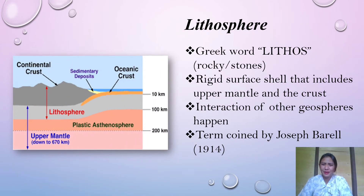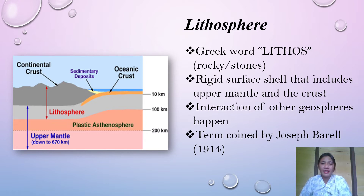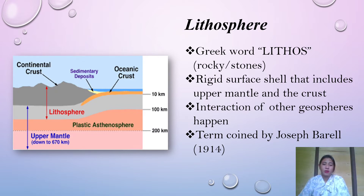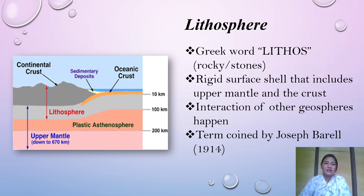What is the lithosphere? Lithosphere comes from the Greek word lithos, which means rocky or stones. The lithosphere is primarily the rocky covering of the whole Earth's surface. It is the rigid surface shell that includes the upper mantle and the crust, where the interaction of other geospheres happen. The term lithosphere was coined by Joseph Barrel in 1914, who studied the first motion of the lithosphere over a molten layer — the asthenosphere.